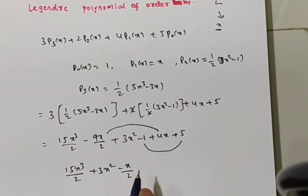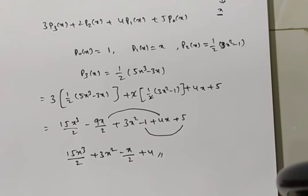Next, constants what I have? These two are the constant. So I can get plus 4. So this is the polynomial in terms of x.